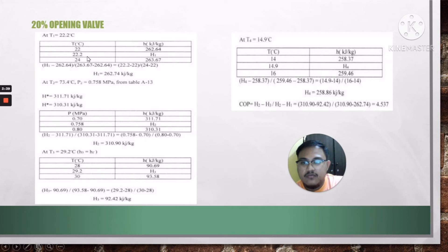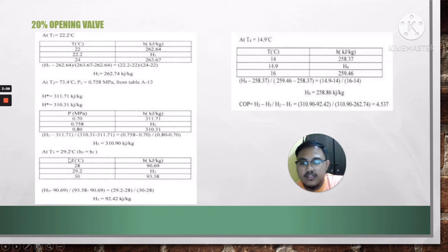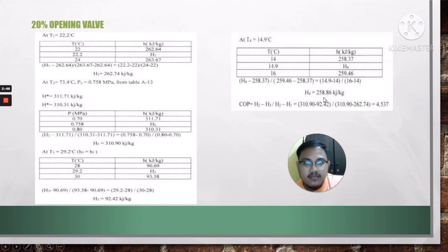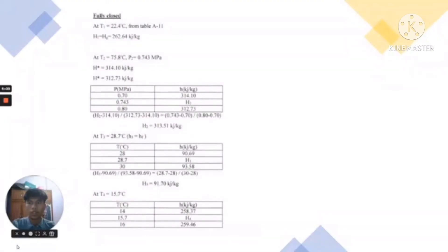For the 20% opening valve, at T1 equal to 22.2°C, H1 is 262.74 kJ/kg. At T2 equal to 73.4°C, H2 is 310.90 kJ/kg. At T3 equal to 29.2°C, H3 is 92.42 kJ/kg. At T4 equal to 14.9°C, H4 is 258.86 kJ/kg. The coefficient of performance is 4.537.